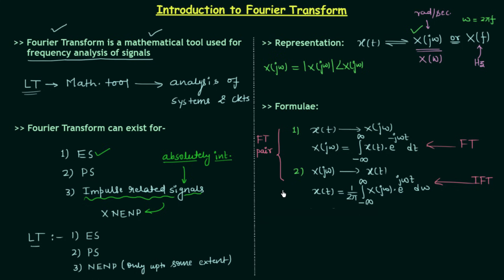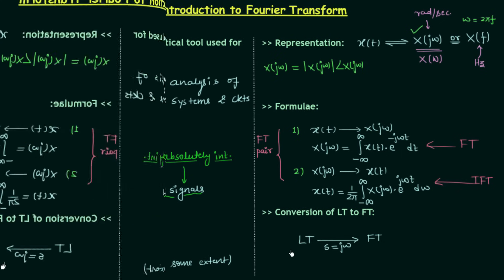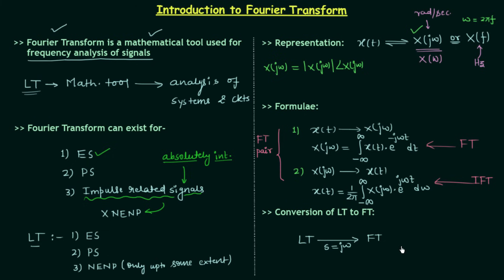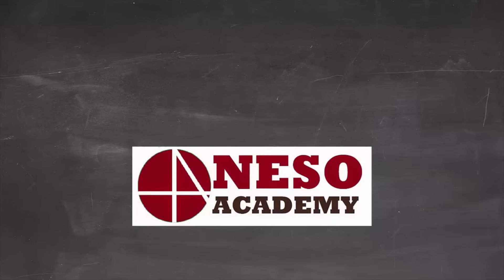Now we move to the conversion of Laplace transform to Fourier transform. This is a very important point and I will prove it in a separate lecture, but for now: if you have the Laplace transform, to get the Fourier transform simply replace s by jω. This conversion is valid only for absolutely integrable signals. So the two formulas and this conversion are valid only for absolutely integrable signals. This is all for the introduction to Fourier transform. If you have any doubt, you may ask in the comment section.